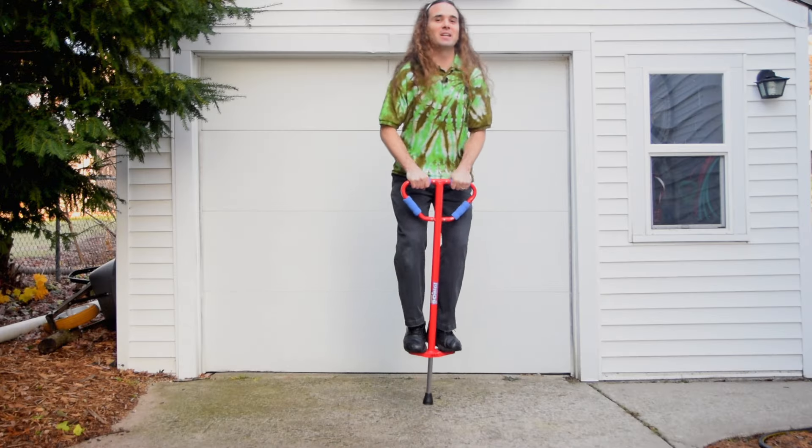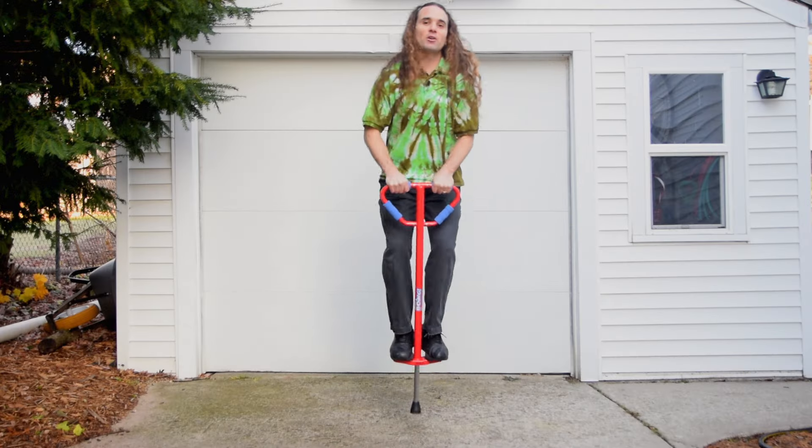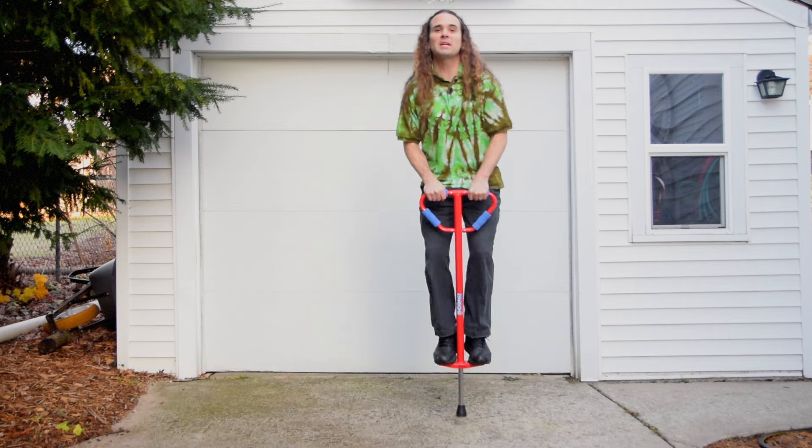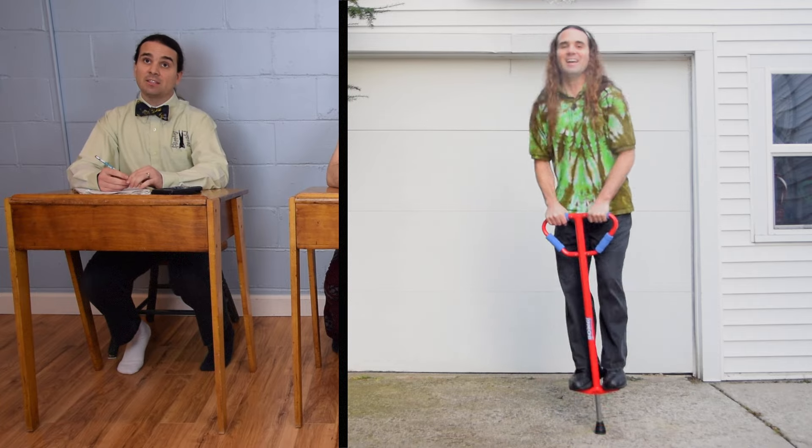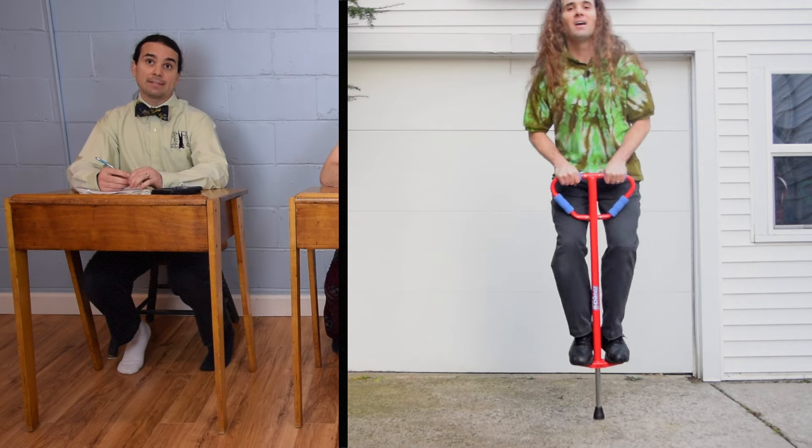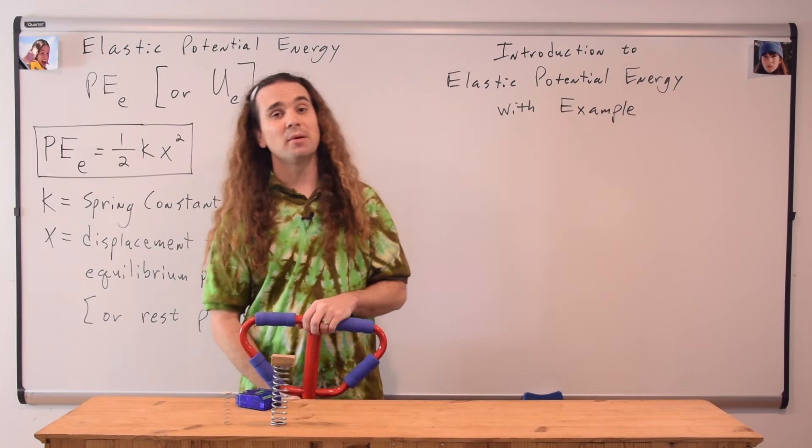And what about this pogo stick, Billy? Do you think the spring inside this pogo stick has a large or a small spring constant? Well, when you bounce on the pogo stick, it looks like it probably applies a pretty large force to the spring, so that spring must have a large spring constant. That is correct, Billy.